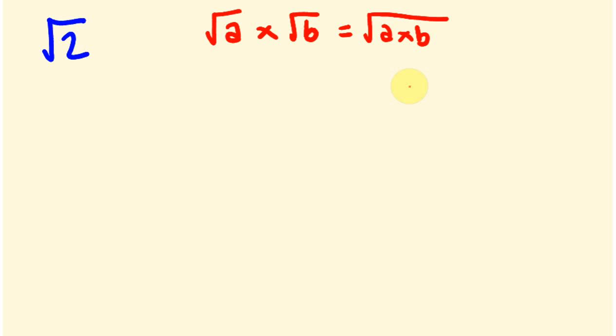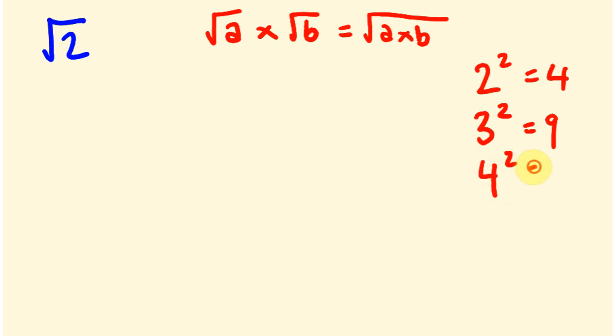Let's look at a couple of examples. Perfect squares — just to remind you — are numbers like 2 squared which is 4, 3 squared which is 9, 4 squared which is 16, 5 squared which is 25, and so on. I'll keep those up while we're working through these, because understanding how to simplify surds is one of the big ideas here, and it's something that eludes people a little bit.